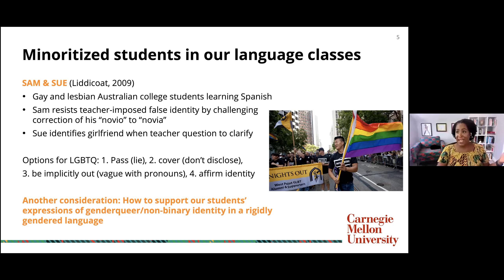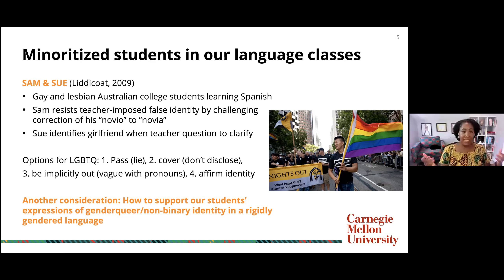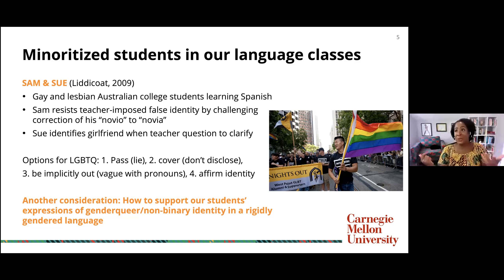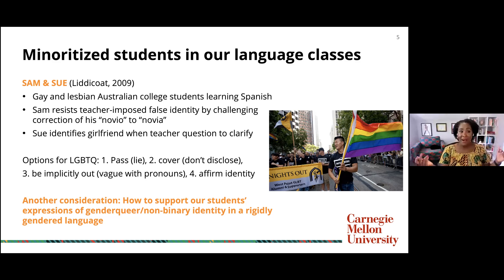We have Sam and Sue. Sam resists the teacher-imposed false identity by challenging the teacher. When asked to describe his girlfriend during a vocabulary activity on personal descriptions, Sam said 'novio' — boyfriend. The teacher corrected him, imposing heteronormative understanding, saying he was making a grammatical mistake, that it's a gendered language. Sam resisted: 'My girlfriend doesn't have a beard. My girlfriend is not a tall, handsome man. I am talking about novio.'